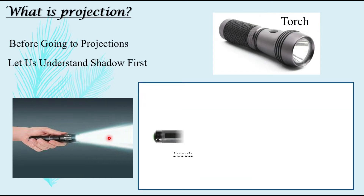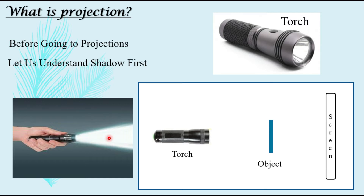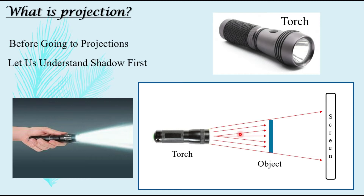If you represent the same on a diagram for understanding, let us take a torch. There is an object kept in front of it at a particular distance, and at some more distance you have kept a screen. Once you start the torch, the light rays will be scattering away as they travel forward. Once they reach this object, a particular shadow is created of this object on the screen. This is termed as a shadow because it will have the same shape as the object, but the size may depend on the distance between the object and the torch.